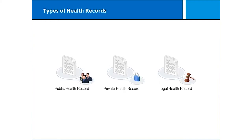We have various types of health records. They include public health records — public health organizations have the authority to obtain and use PHI, though that doesn't mean they can disclose it. We also have private health records — those that are not for public consumption.